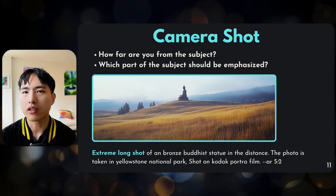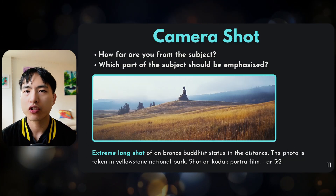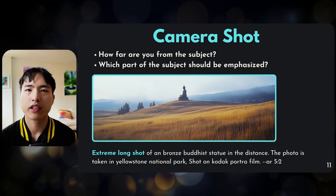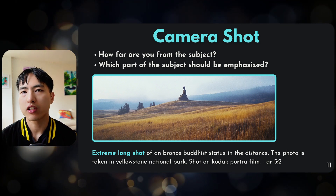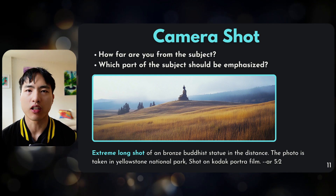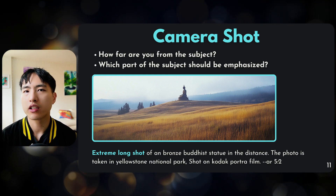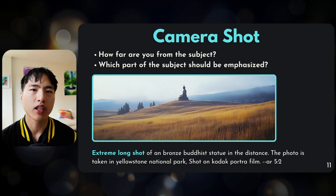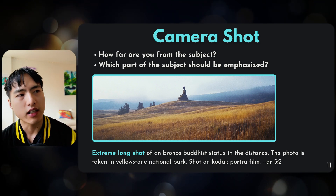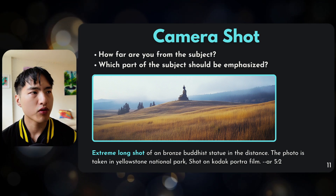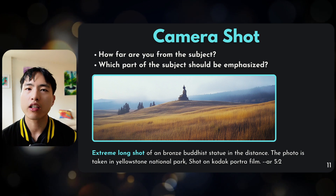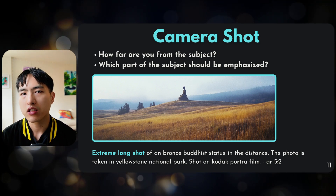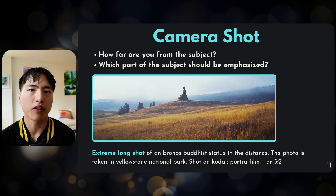Next up is the camera shot. Think of it as emphasizing what parts of the subject you want to focus on, or the distance and how far away you are from the subject. In this instance of a bronze statue, we're taking a long shot so we're really far away — it makes the subject look tiny compared to the environment.